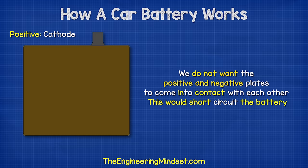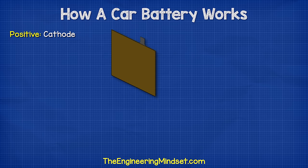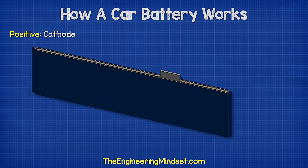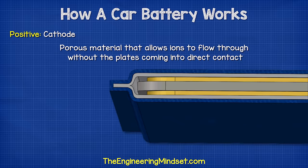We don't want the positive and the negative plates to come into direct contact with each other because this would short circuit the battery. So instead we place each positive plate into an envelope separator — a porous material that allows ions to flow through it without the materials coming into direct contact with each other.